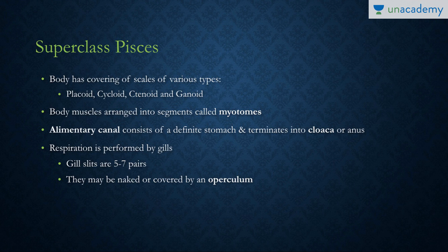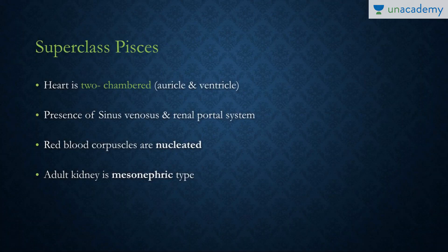Respiration is performed by gills, as they live inside the water. There are usually five to seven pairs of gills, which may be naked or covered by a covering known as the operculum. The heart is two-chambered — there is only one auricle and a single ventricle.